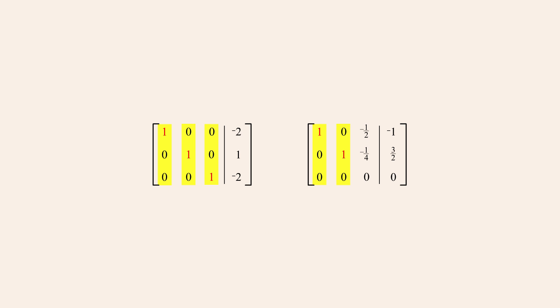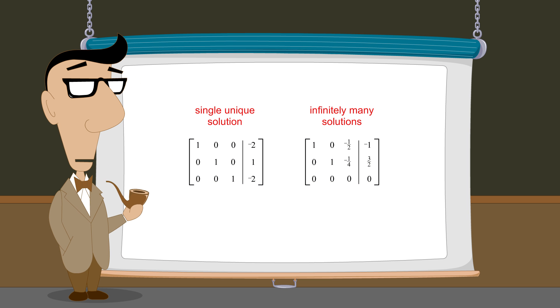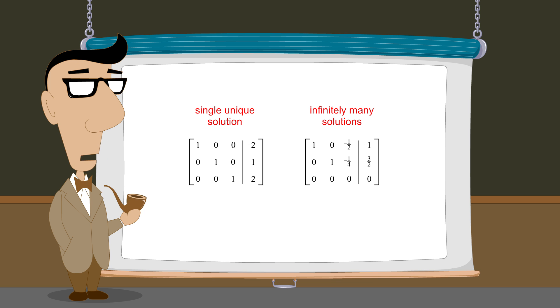The positions of these pivot columns tell us what type of solutions the system has. If every column to the left of the vertical line is a pivot column, then the system has a single unique solution. And if any column left of the vertical line is not a pivot column, then the system has infinitely many solutions. We have already seen that when a system has a single unique solution, it is easy to describe that solution simply by looking at the reduced row echelon form matrix.